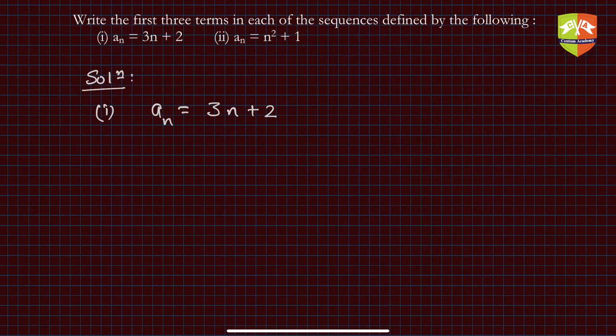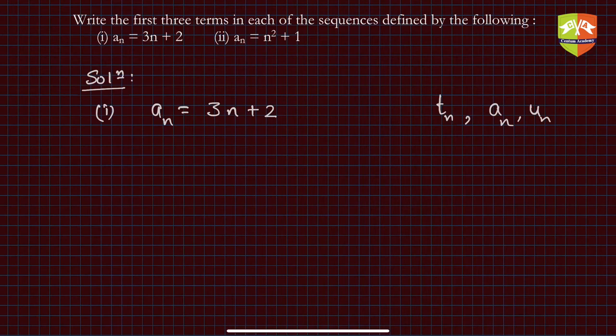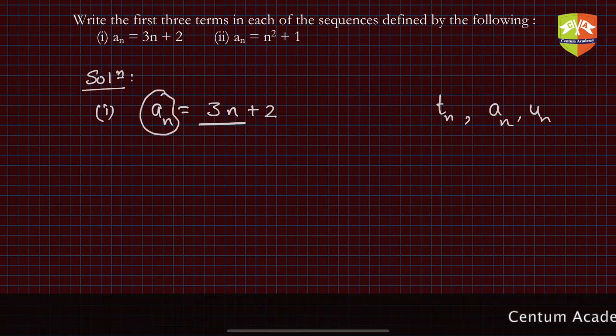They're asking to write three terms in the sequence. In our previous sessions we had taken nth term as t_n, but we also discussed that literature may use a_n or u_n or anything. Here they are talking about nth term and it is a linear term as we saw in previous sessions.